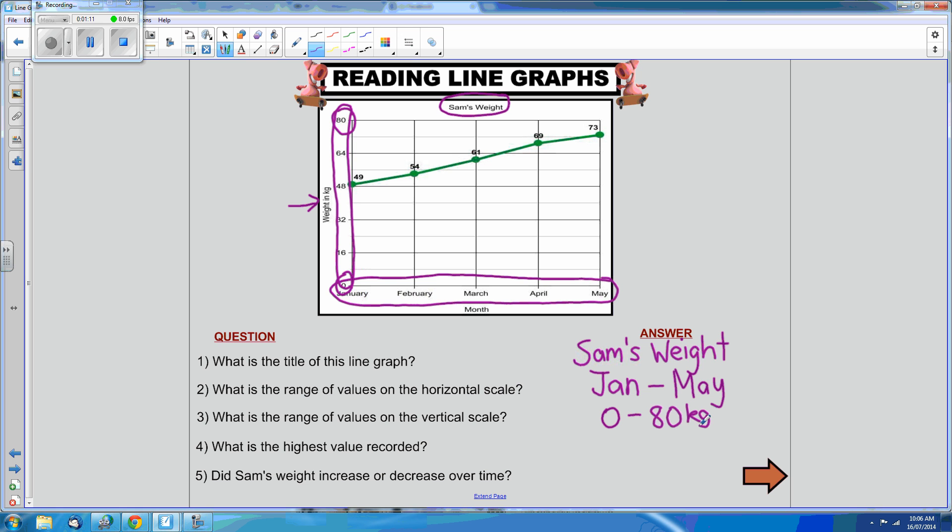Question 4: What is the highest value recorded? When we are looking for values on a line graph, we are looking at the points that are plotted. The highest point that is plotted on this graph is here, 73. So our answer there is 73, and we need to use our unit of measurement, kilograms.